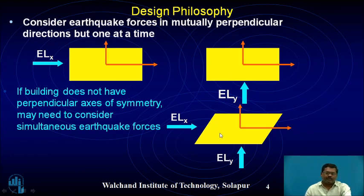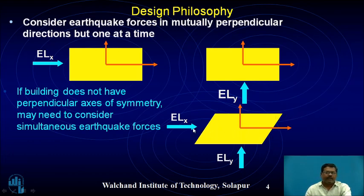For buildings that do not have a perpendicular axis of symmetry — where the two sides are oblique to adjacent sides and there is no symmetry — earthquake load in x direction (ELX) and earthquake load in y direction must both be considered simultaneously.